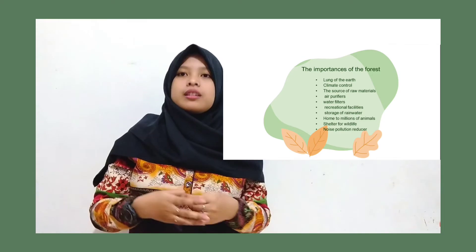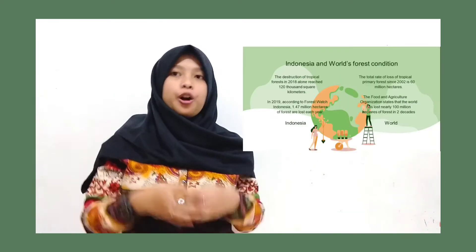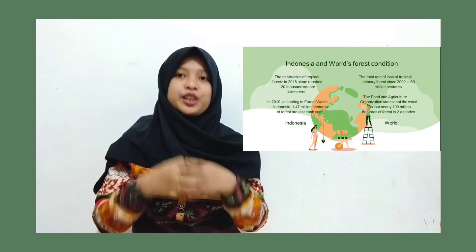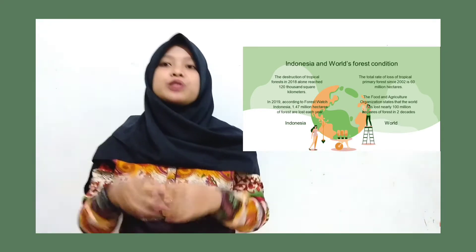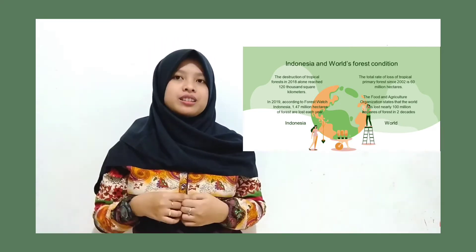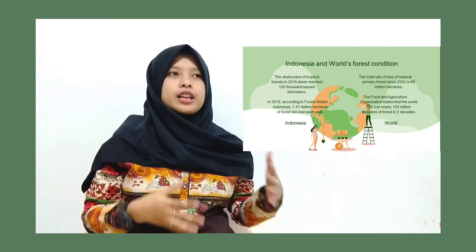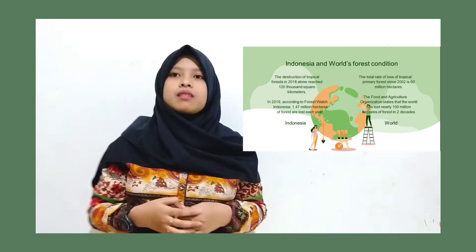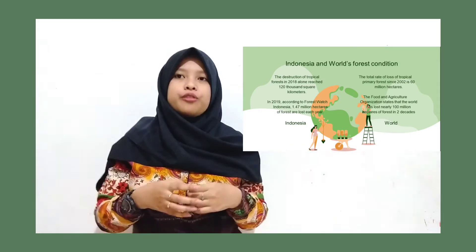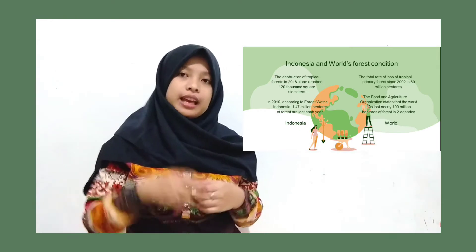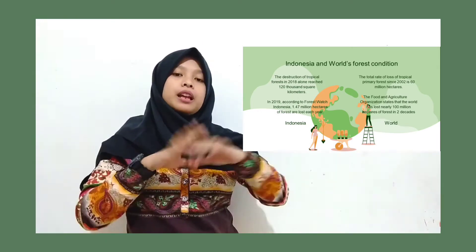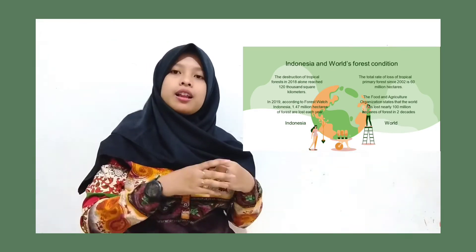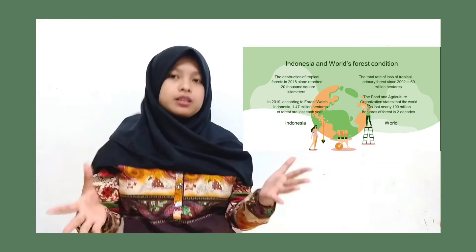Next, I'm going to tell you about the condition of forests in Indonesia and the world. In Indonesia, the destruction of tropical forest in 2018 alone reached 120,000 square kilometers, the same as 30 soccer fields. And in the world, the total rate of loss of tropical primary forest since 2002 is 60 million hectares, or 1.3 times as large as Sumatra island. You can imagine how big that is.